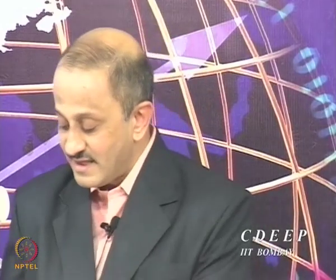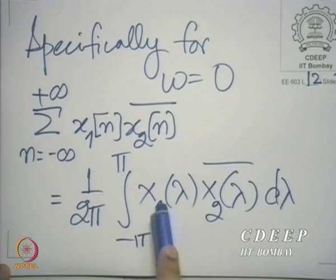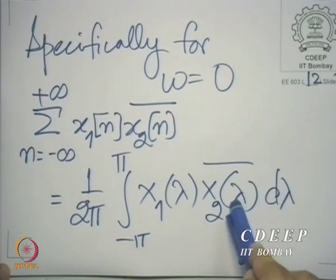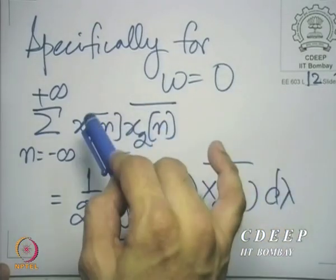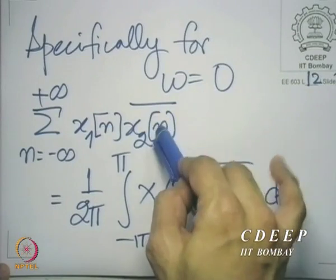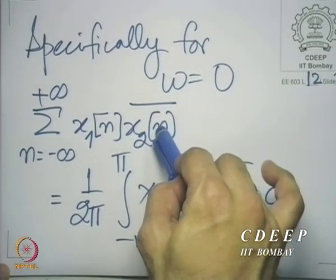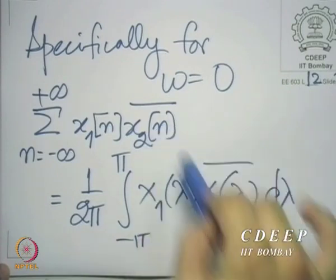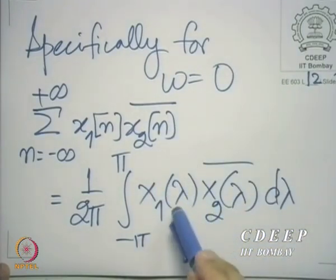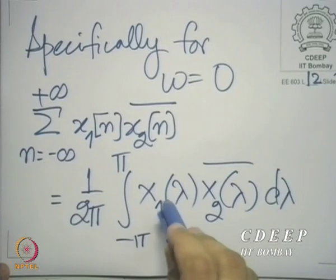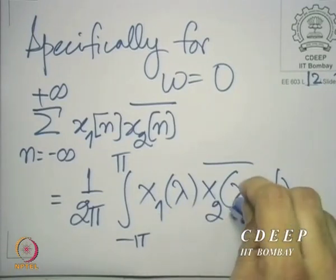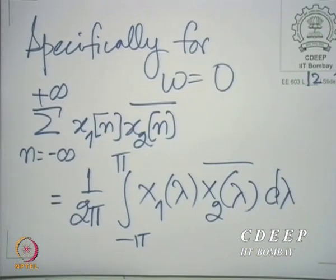On the right hand side, you have a product of corresponding points on the discrete time Fourier transforms. The second one is complex conjugated, just as it is for the sequence. You multiply each point on one DTFT by the complex conjugate of the corresponding point on the other DTFT and you integrate — because here the variable ω is continuous, not discrete. So the right hand side is equivalent to the inner product, but in the frequency domain.